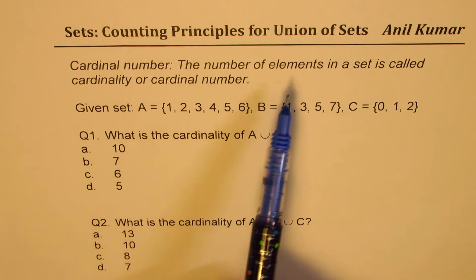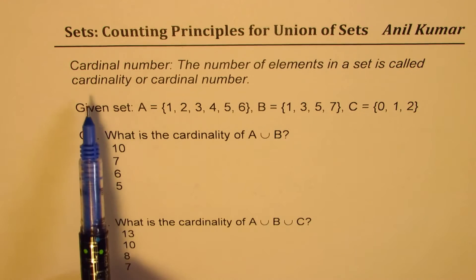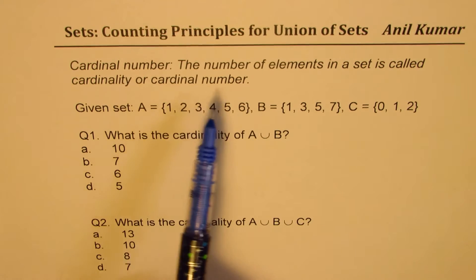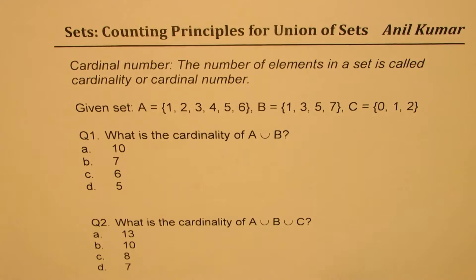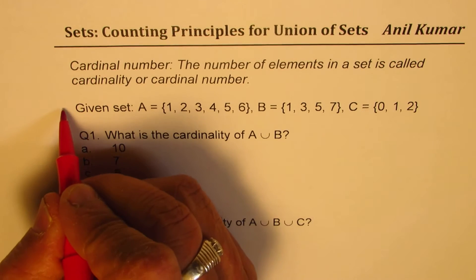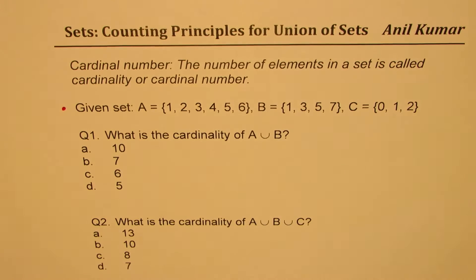Cardinal number: the number of elements in a set is called cardinality or cardinal number. We'll take up one particular example and find number of elements for different kinds of sets. Basically, union of sets.